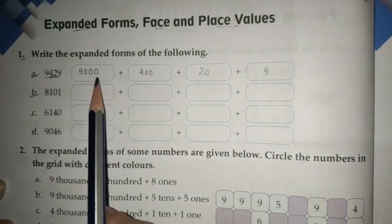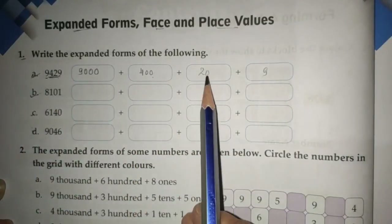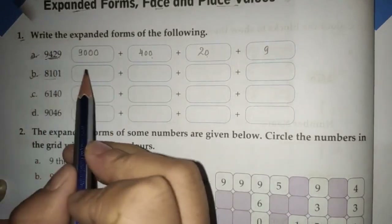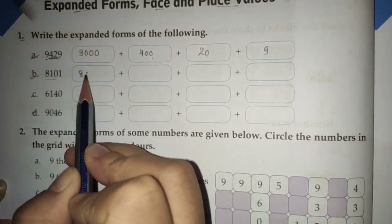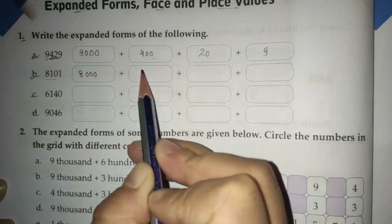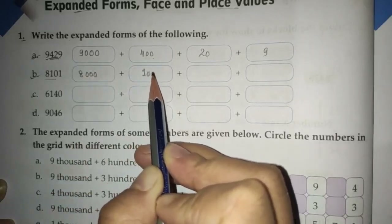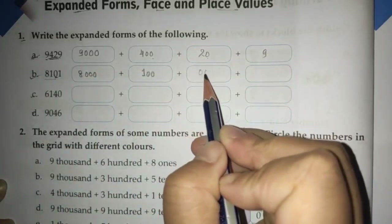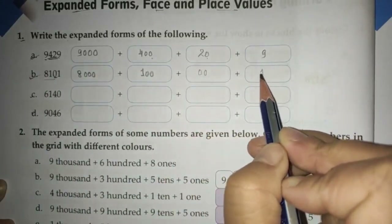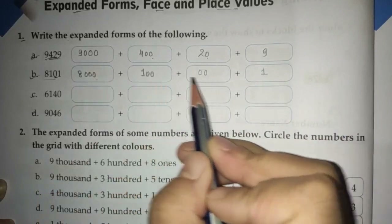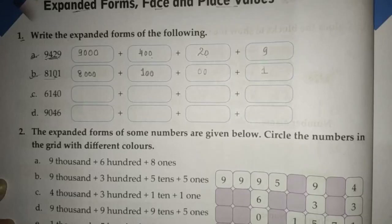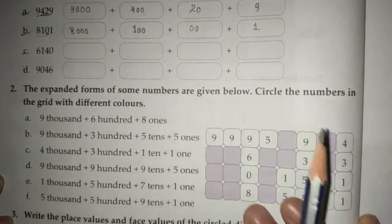Next, expand the number by looking at its place value. For 8,101: that is 8,000 plus 100. There is a zero in the tens position, so you write zero there, and then plus 1. So 8,000 + 100 + 00 + 1. This is how you expand a number.